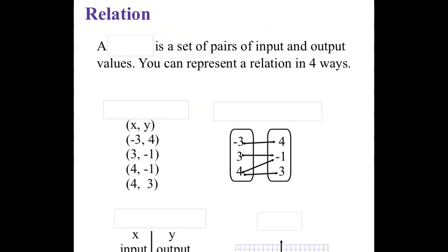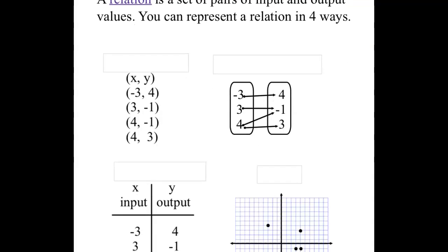We define a relation to be a set of pairs of inputs and output values. In other words, we're just pairing up two numbers. There's four different ways that we can represent that. We can just show them as ordered pairs. We're pairing them up in a certain order, typically x and y.